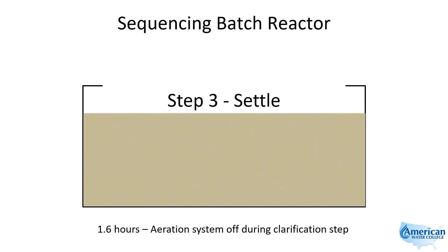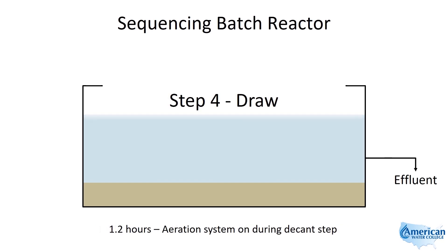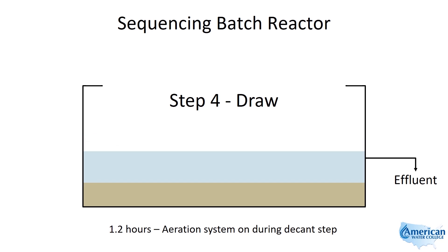Once the reaction period is finished, it's time to turn off the aeration system and allow the solids to separate from the liquid. The secondary clarifier is simulated here, and the activated sludge is allowed to settle to the bottom of the tank as the water is clarified. Once the sludge has settled and the water has been clarified, the draw step is initiated. Here the supernatant is drawn off as treated effluent and sent to the next process, whether it's disinfection or some other form of tertiary treatment.